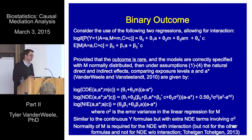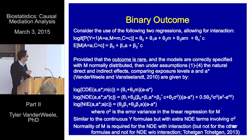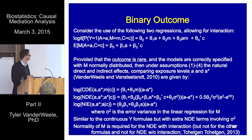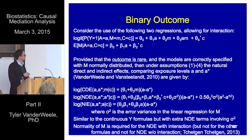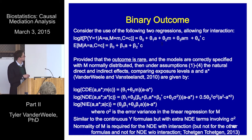We can do the same sort of regression-based approach. With a binary outcome, we could fit a logistic regression for the outcome, now allowing for exposure-mediator interaction. If the mediator is continuous, we could fit a linear regression model for the mediator. One can show that, provided the outcome is relatively rare — maybe less than 10% — and the models are correctly specified, and with M normally distributed, then under confounding assumptions one through four, the natural direct and indirect effects on the odds ratio scale are given by these expressions.